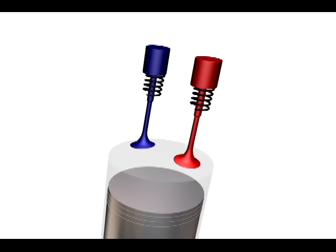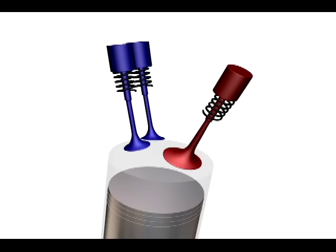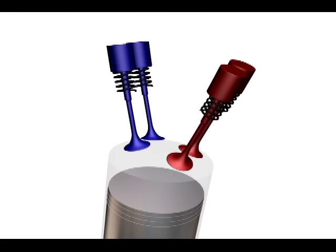The number of valves that engines have varies. Older engines tend to have one intake and one exhaust valve. Some engines have two intake and one exhaust valve. Most high-performance engines use two intake and two exhaust valves.